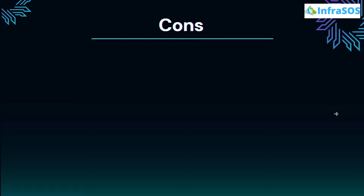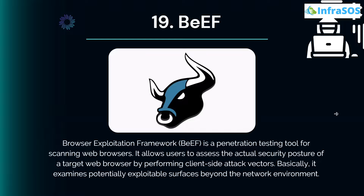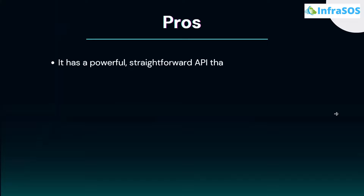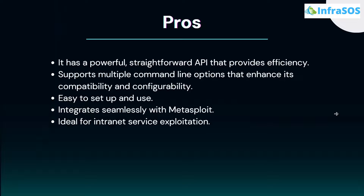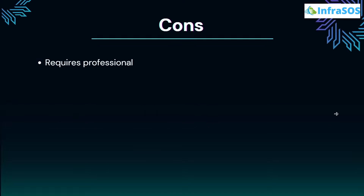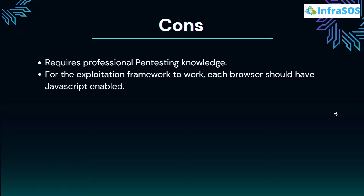At number 19 we have BeEF — Browser Exploitation Framework. BeEF is a penetration testing tool for scanning web browsers. It allows users to assess the actual security posture of a target web browser by performing client-side attack vectors, examining potentially exploitable services beyond the network environment. Pros include a powerful and straightforward API for efficiency, easy setup and use, seamless integration with Metasploit, and being ideal for intranet service exploitation. Cons include requiring professional pen-testing knowledge and each browser needing JavaScript enabled for the exploitation framework to work.